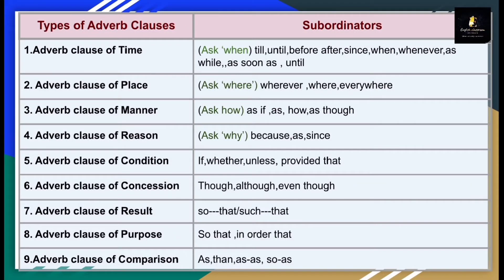Here is a chart with two columns. In the first column you can find different types of adverb clauses, and in the second column you can find the subordinators used in those particular clauses. There are nine types of adverb clauses. With the help of this chart, you can solve various kinds of examples of adverb clauses.